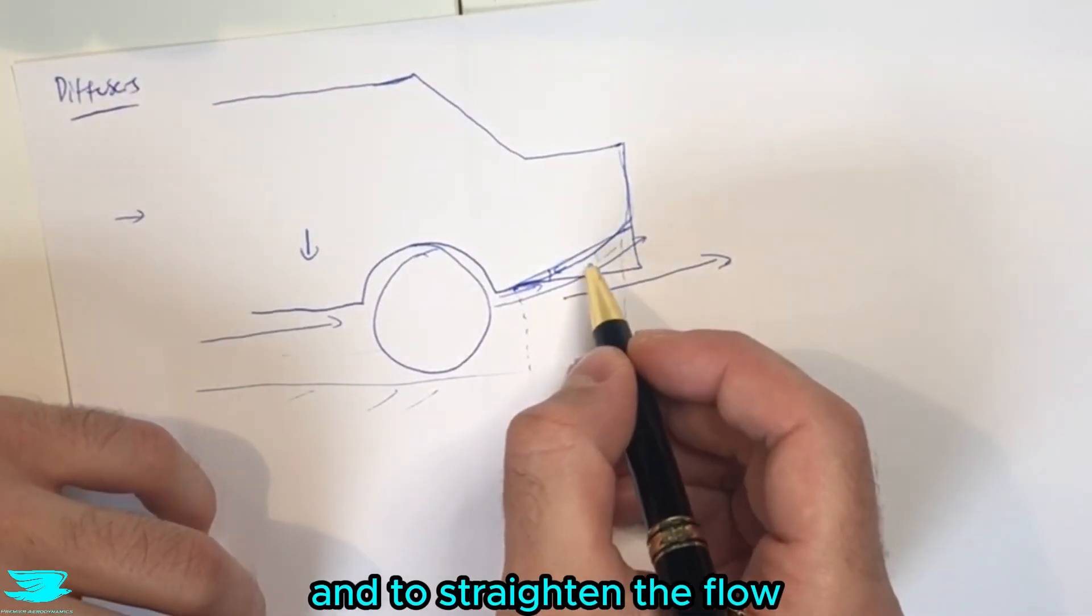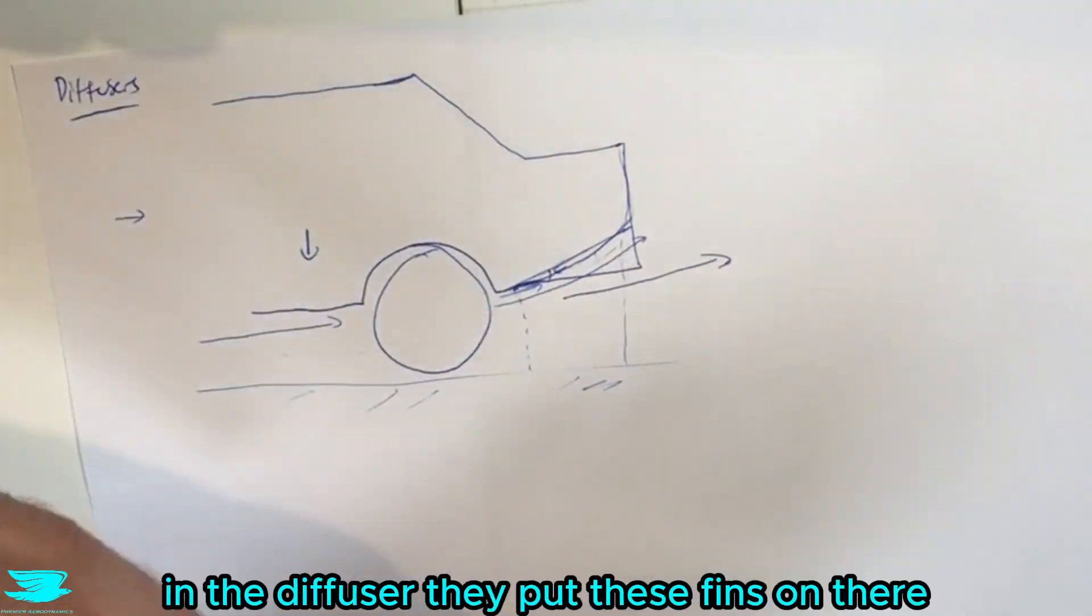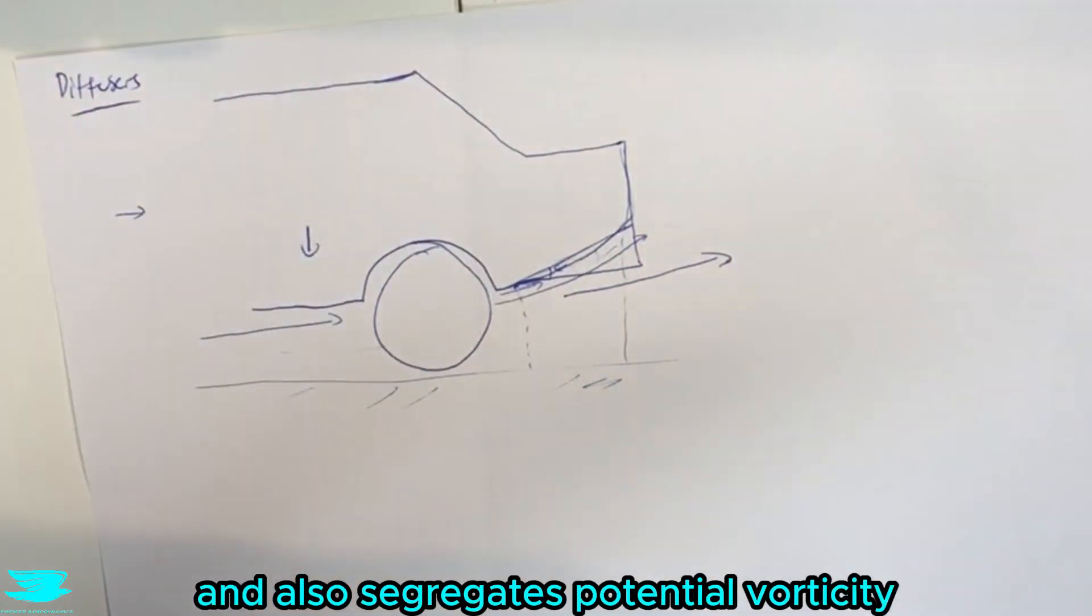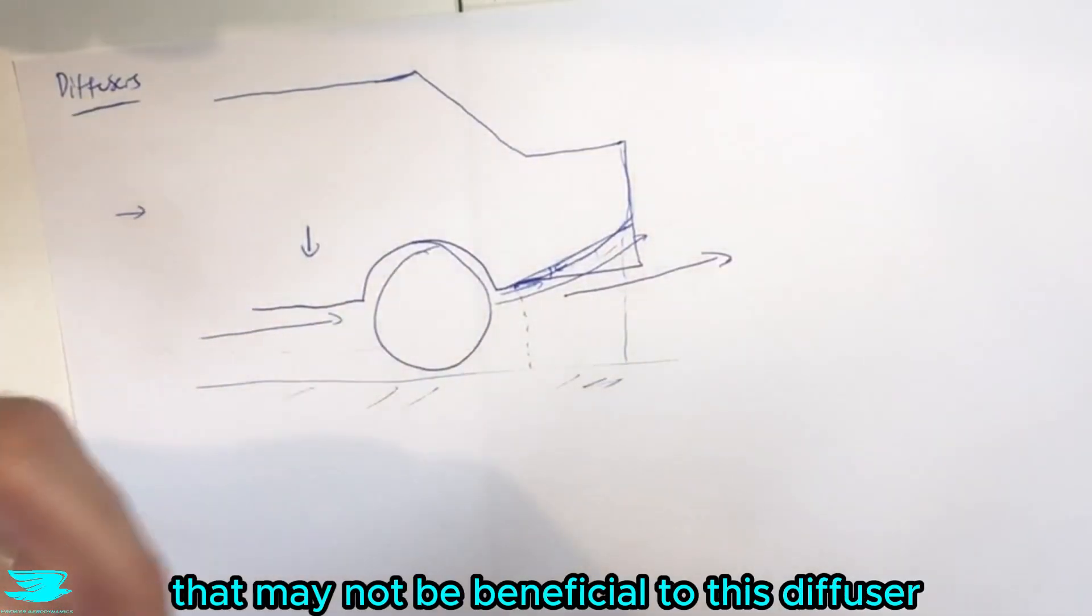And to straighten the flows, to make sure that the flow doesn't wander around in the diffuser, they put these fins on there that then straightens the flow and also segregates potential vorticity that's coming from elsewhere that may not be beneficial to this diffuser.